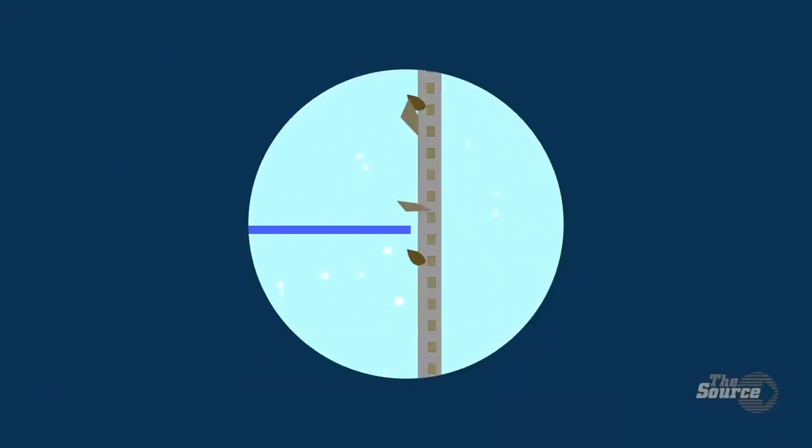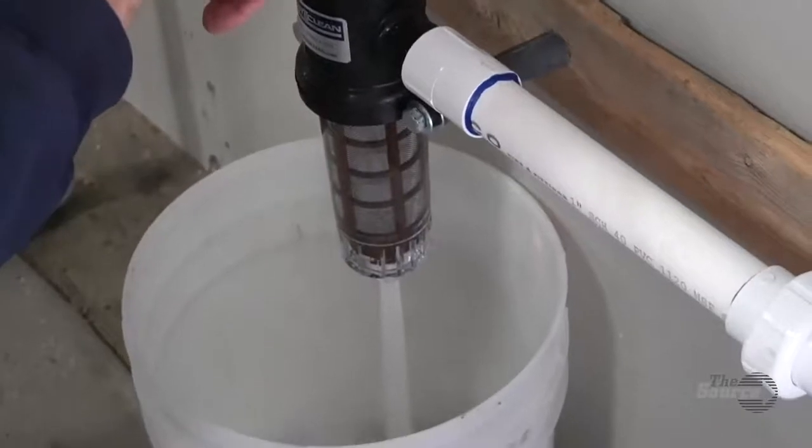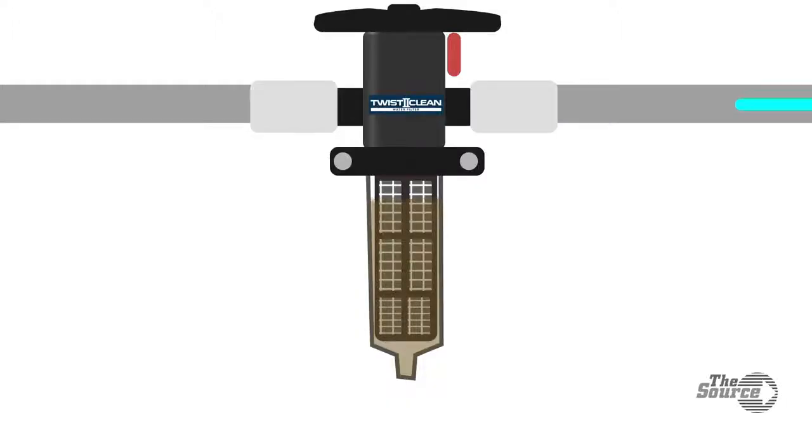through the filter, which removes all the sediment trapped within the screen, and it opens the port at the bottom of the filter, which allows the dirty water to flow out of the system altogether. In one twist, the filter